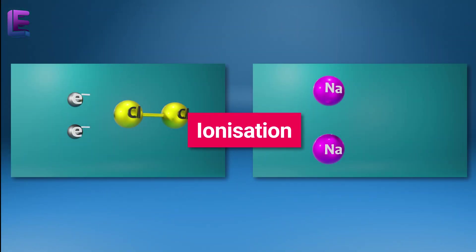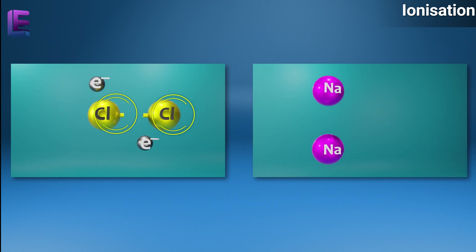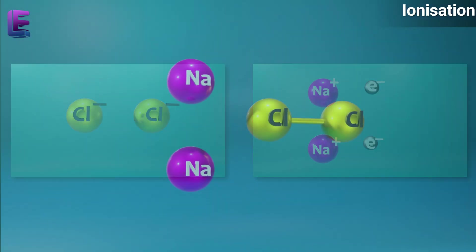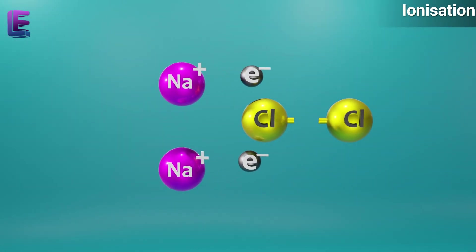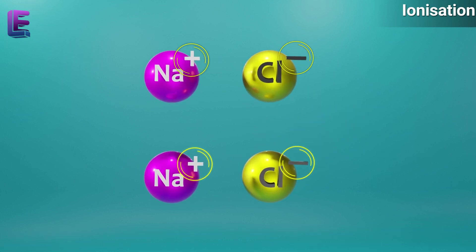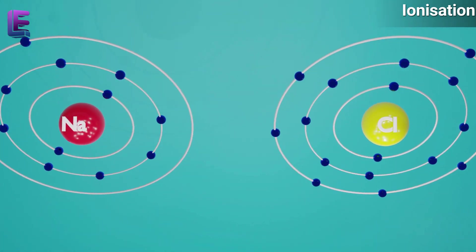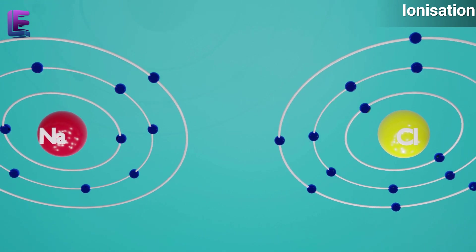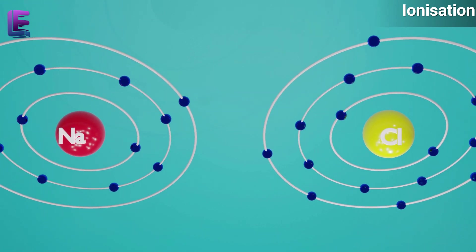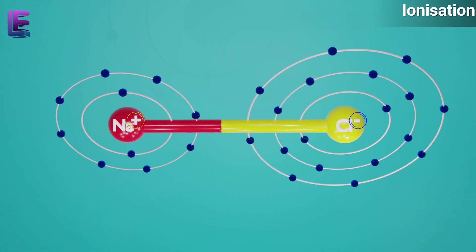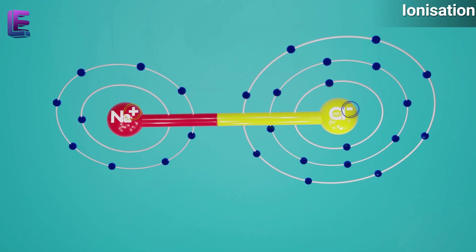Ionization is the process of gaining or losing an atom or an electron, thus forming a positive or a negative charge. Generally, along with other chemical changes, it produces electrically charged atoms called ions. Ionization can occur by the meeting between subatomic particles, between atoms, or between atoms and ions, or by electromagnetic radiation, or by interaction or loss of electrons.